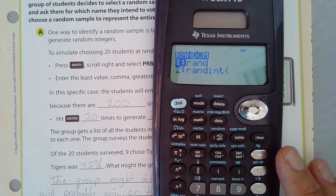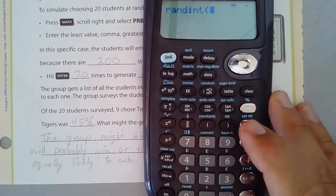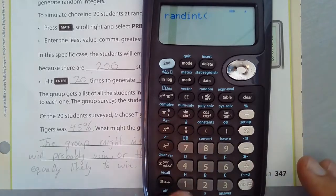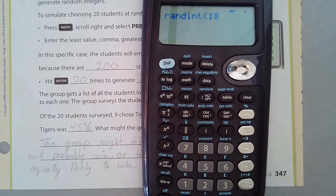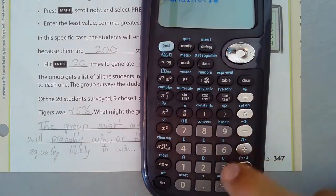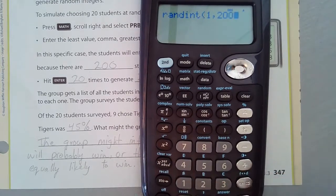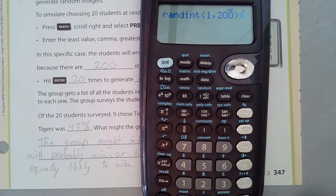Now I have to do one comma, and the comma is above that, that's the second function right there. So I hit second function comma, so that produces a comma there, and then 200, and then I close the parentheses and it'll give me a random number from 1 to 200.